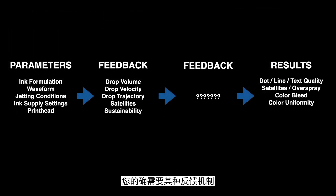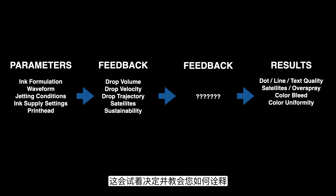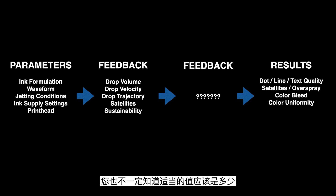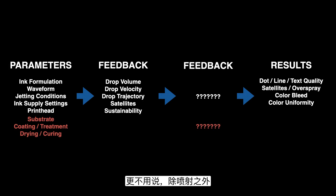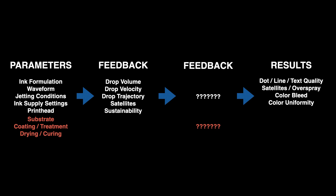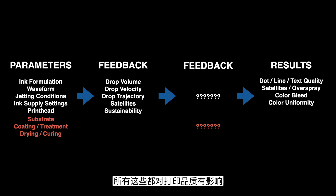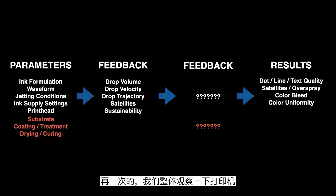As you can see, what might appear better on the drop watcher or from the jetting perspective is not necessarily going to result in something that looks better on the print — and the print is really what we care about. This introduces a problem: you need some sort of feedback mechanism between the jetting and the printing. Even if you can measure the volume and velocity of the drops, it doesn't necessarily tell you what the right values are. Not to mention, there is more going on inside a printer besides just the jetting — the substrate, coatings, treatments, and drying all have an impact on the print results.